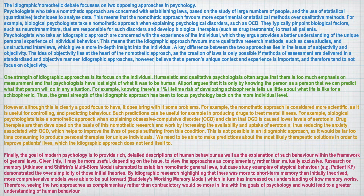My final point at the end argues for an interactionist approach. So rather than having to use one approach or the other, it says actually we could be using both of them, and then it gives an example of how we could use both and why that might be quite beneficial. That's a really nice way to round off an essay in issues and debates — if you can get a little bit of an interactionist approach in and say we shouldn't be doing one or the other, but maybe there's a way in which both can work together. Examiners will love it and it will give you some nice marks. If you can flesh it out and give some detail to each of those points, then you are easily going to get a level four essay.